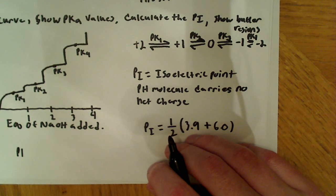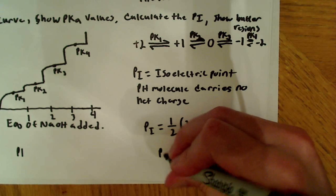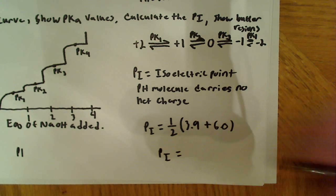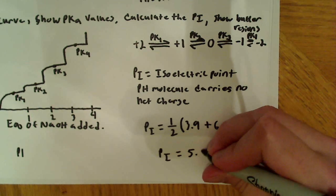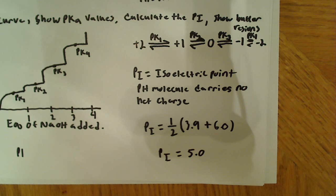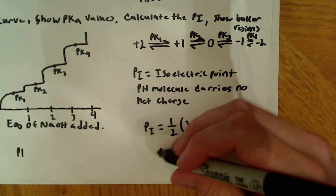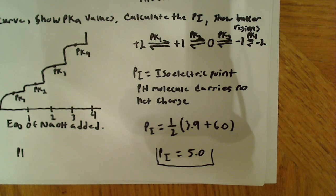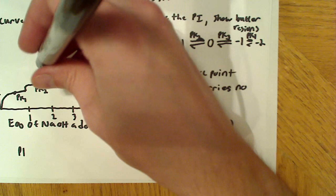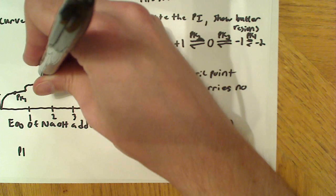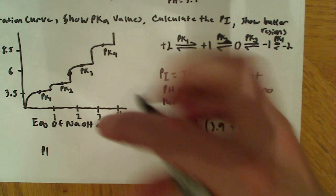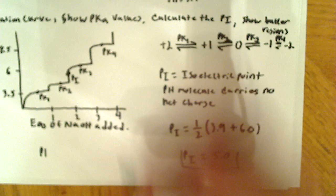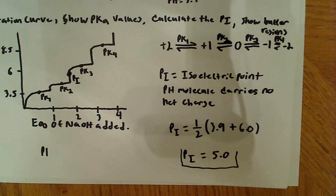So now we have everything we need to make the calculation. And if you plug it into a calculator, you'll wind up with 5. It's actually 4.95, but I'm sure you can round up to 5. Now we should also mark that point on the graph. So we'll go over here and we'll look for 5, and we'll say 5 is somewhere like about here. So I'll mark that on the graph, and I'll label that as pI. And that becomes the pI.